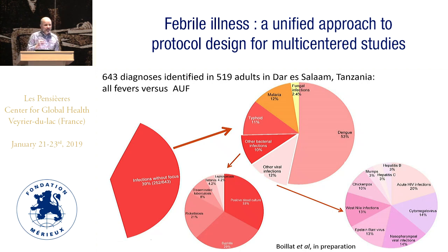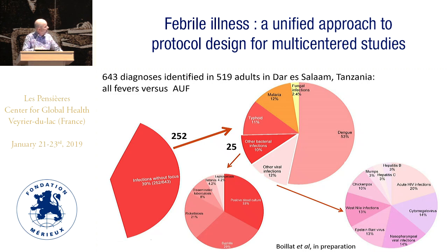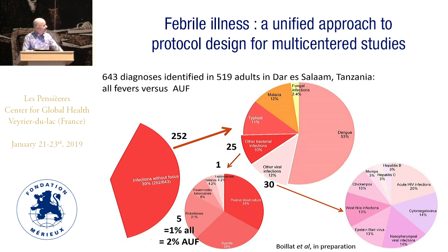When looking at numbers, people say 'we had 21% rickettsiosis' — but this was from the infection-without-focus subset. In the overall picture, if you say we had 10% bacterial infection, this is 25 out of 519 adults. If you say 4% leptospirosis, actually we have one case. The same for rickettsiosis — 5 cases, which is 1% of the total. Just to highlight: West Nile at 13% was only 4 cases, again about 1% of the total. It is difficult to look at percentages without absolute numbers.